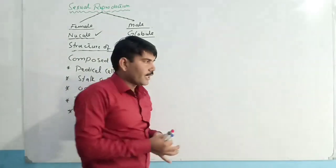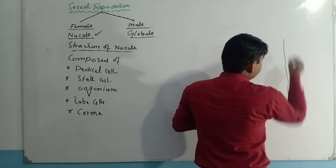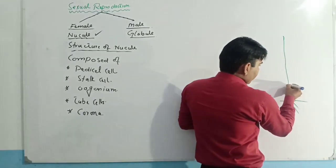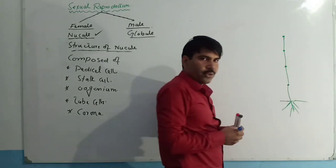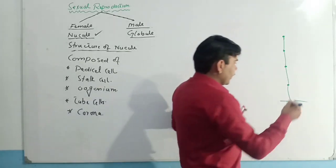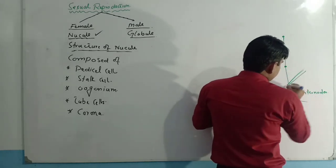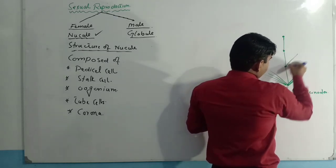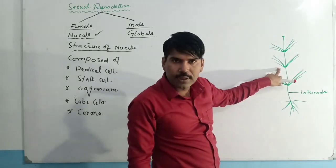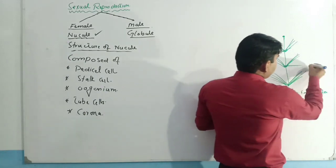I will explain this with the help of a diagram. Looking at the plant body of Chara, we can see it is composed of internodes as well as nodes. These points are known as nodes, and the distance between two nodes is known as an internode.